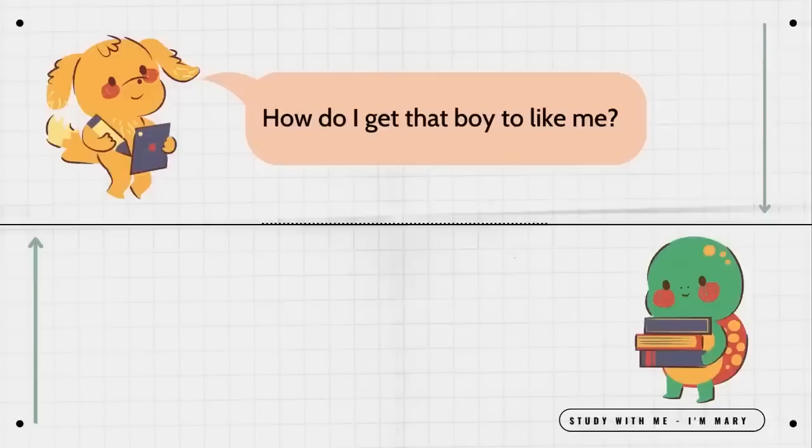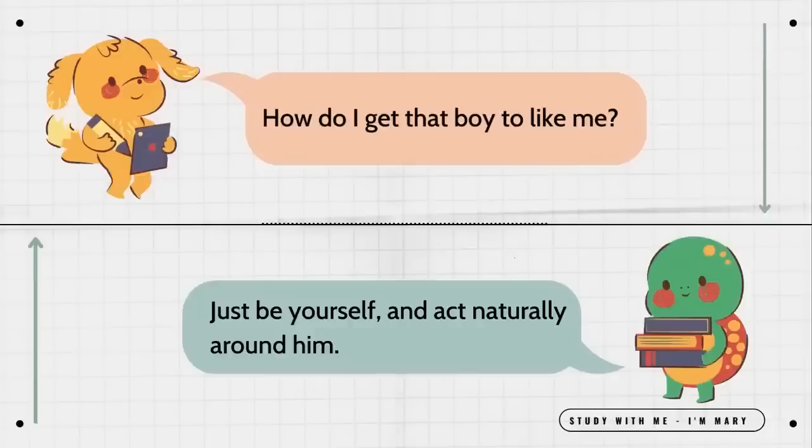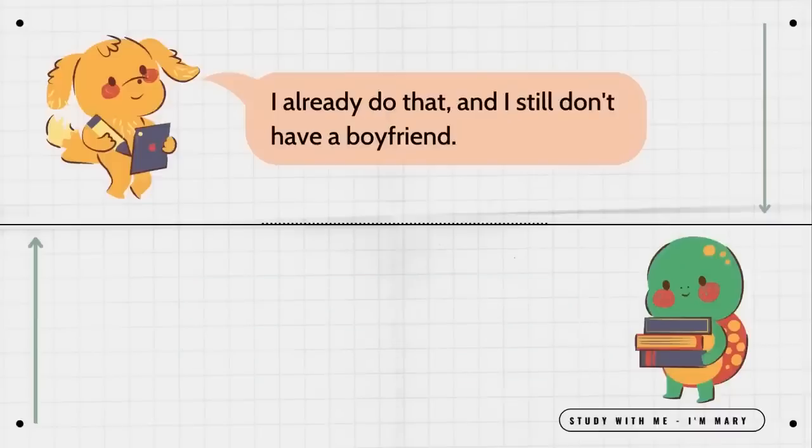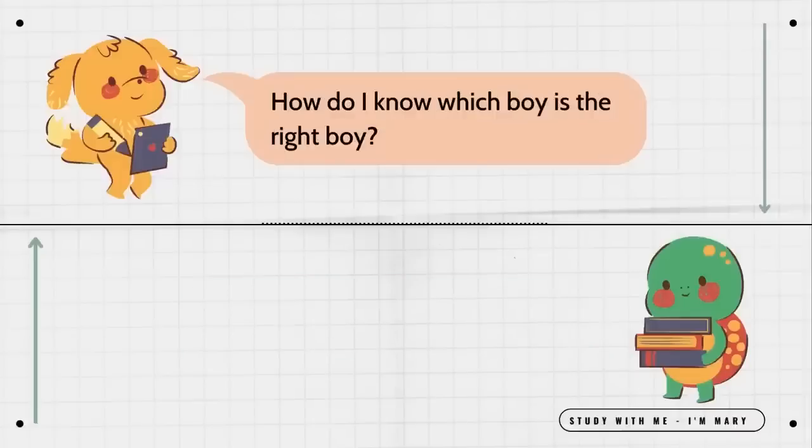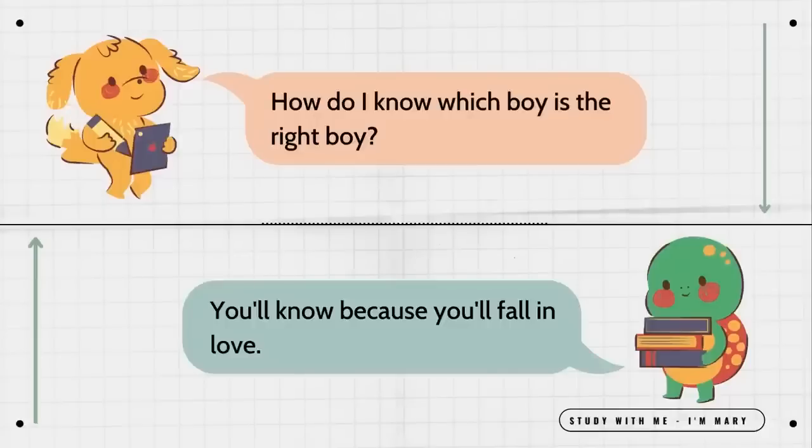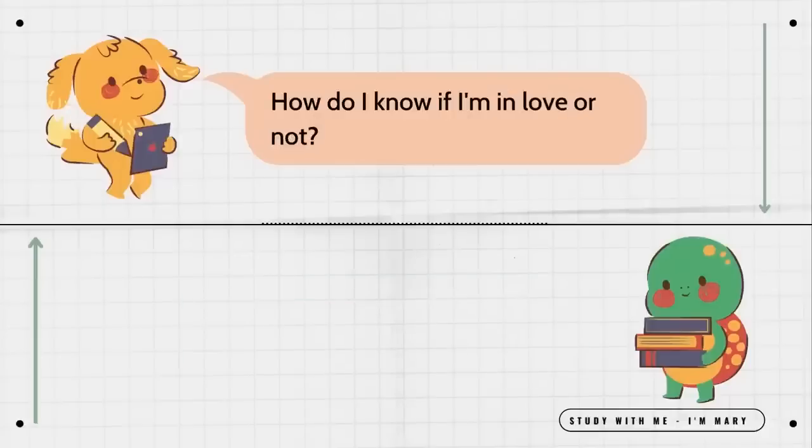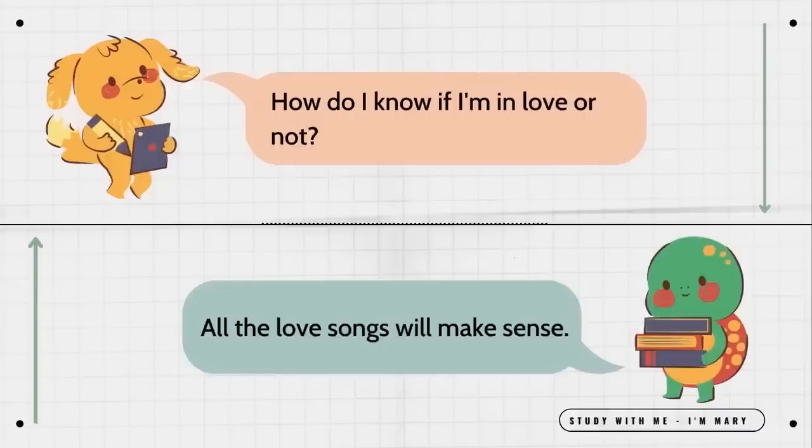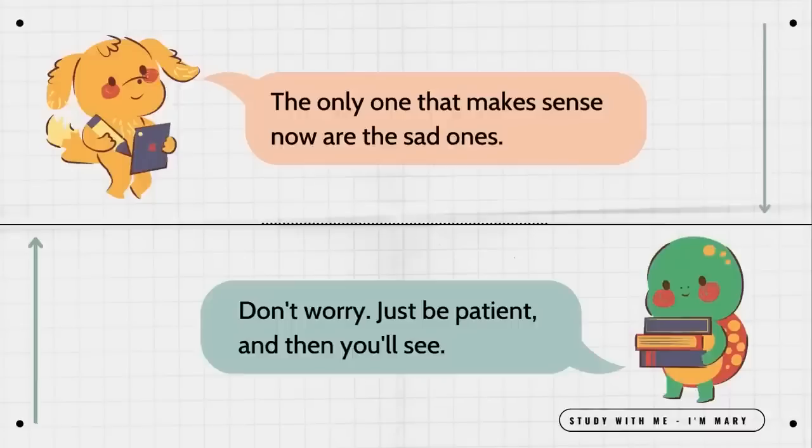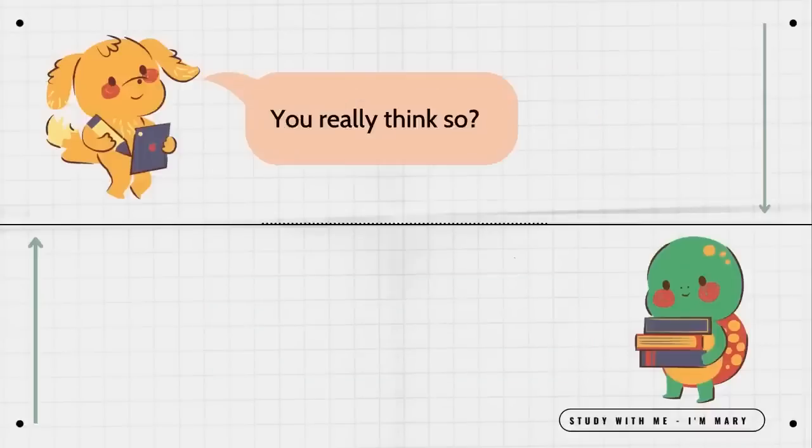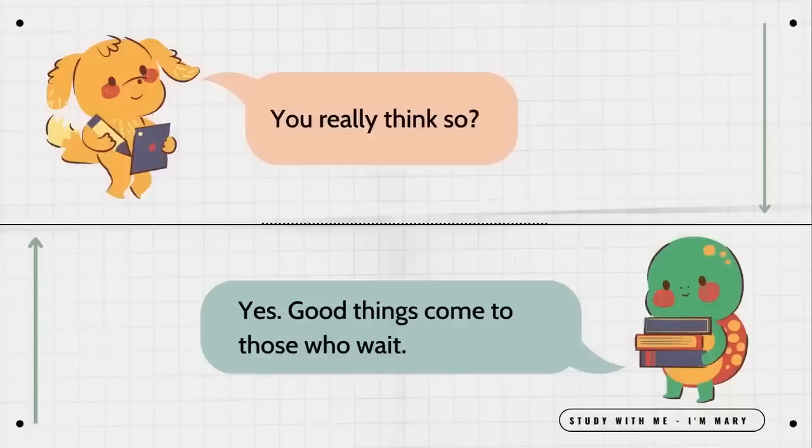How do I get that boy to like me? Just be yourself and act naturally around him. I already do that and I still don't have a boyfriend. You will once the right boy comes along. How do I know which boy is the right boy? You'll know because you'll fall in love. How do I know if I'm in love or not? All the love songs will make sense. The only one that makes sense now are the sad ones. Don't worry. Just be patient and then you'll see. You really think so? Yes, good things come to those who wait.